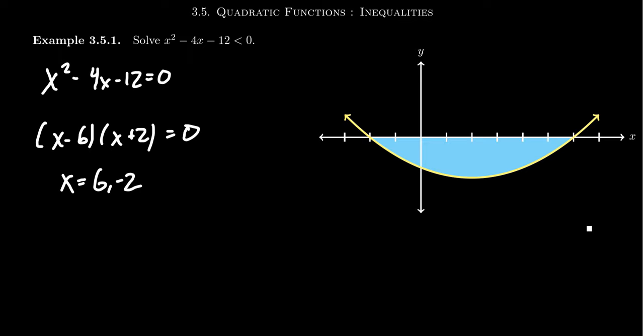These markers are not necessarily solutions to the inequality, but they do help us understand what the solution looks like. What I would then do is draw a number line like you see illustrated here, and mark off x equals 6 and x equals negative 2.